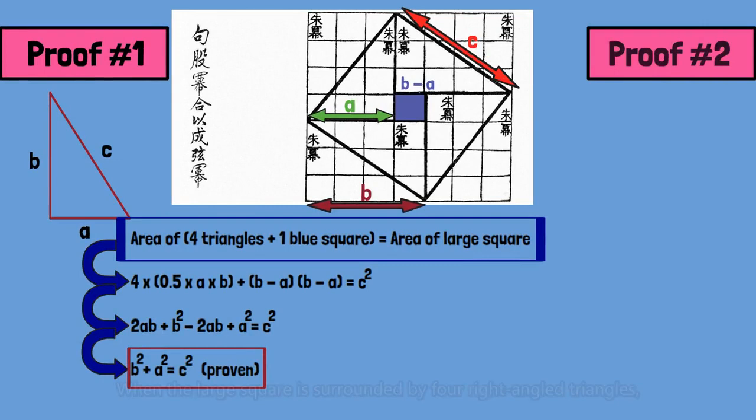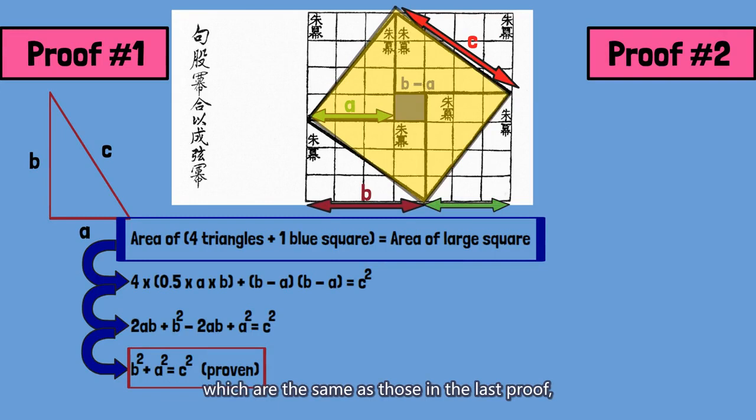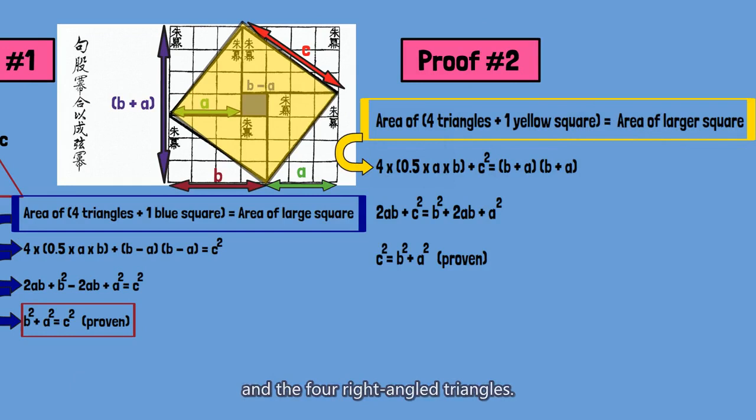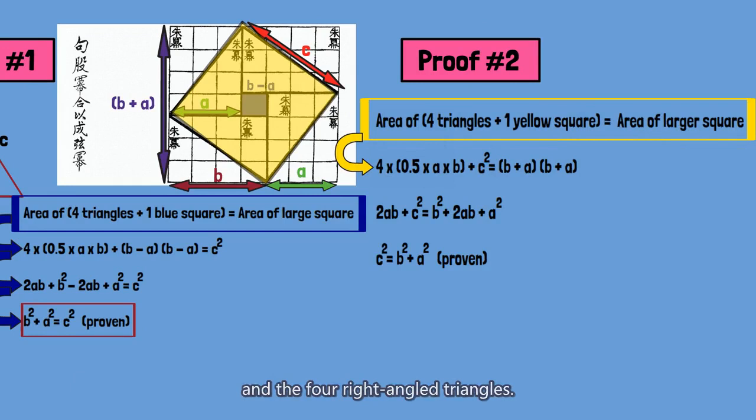Proof number 2. When the large square is surrounded by four right-angled triangles, which are the same as those in the last proof, they form a larger square with the edge length b plus a. The area of the larger square is the sum of the area of the large yellow square and the four right-angled triangles. After simplification, we would still get the same result as above.